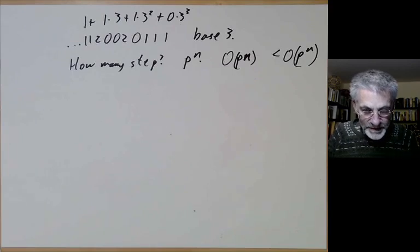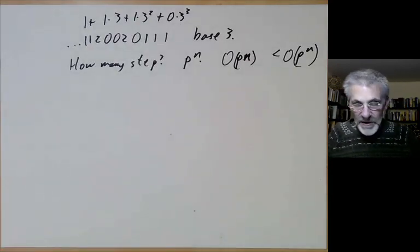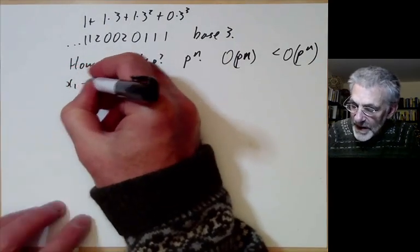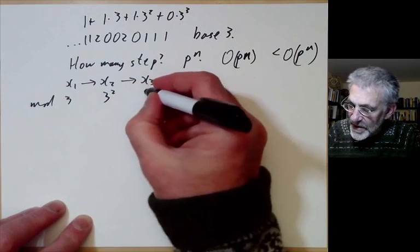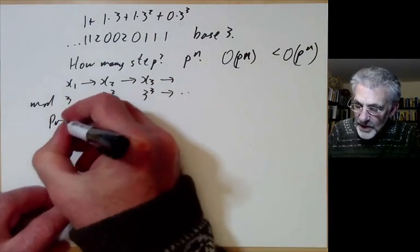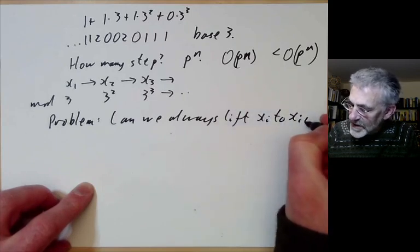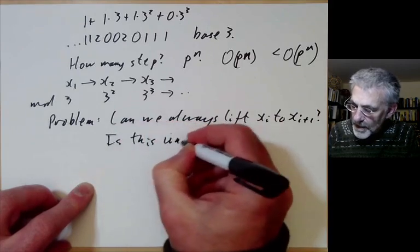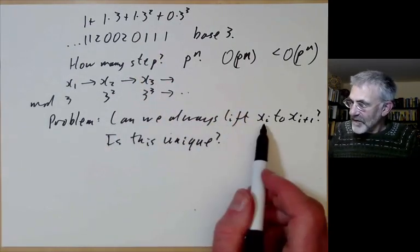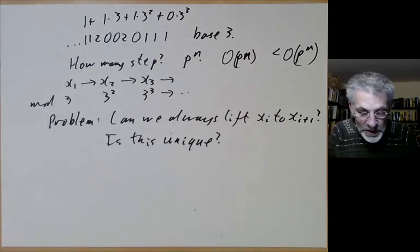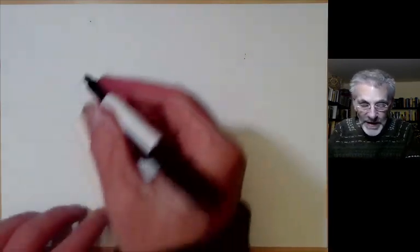Fortunately, there's a better method due to Hensel. But before that, let's discuss a problem with the current approach. We're taking x₁ and lifting it to x₂, then x₃ and so on — from mod 3, to mod 3², to mod 3³. The question is: can we always lift xᵢ to xᵢ₊₁? And is that lift unique? In the example x² ≡ 7 mod 3^n, it turns out the lift always exists and is unique. However, this need not always be true.